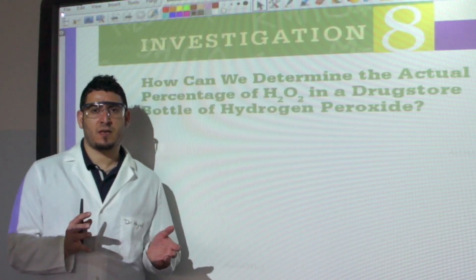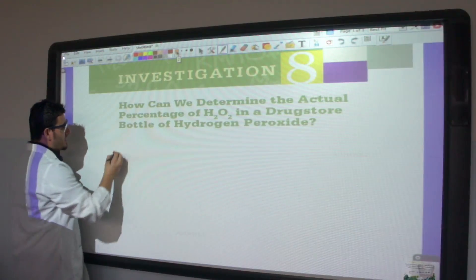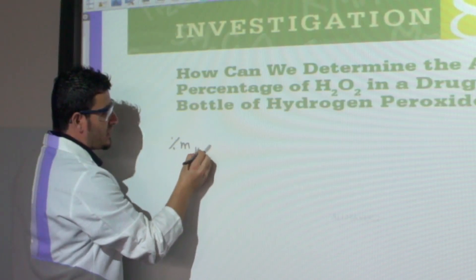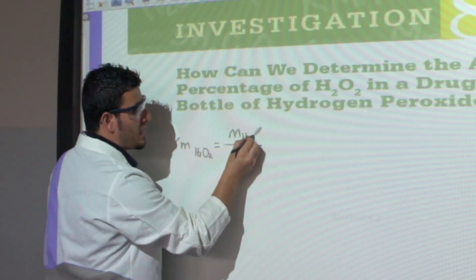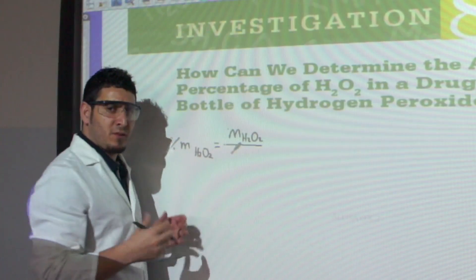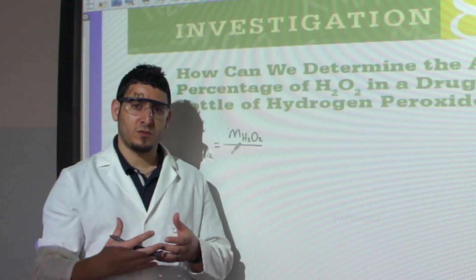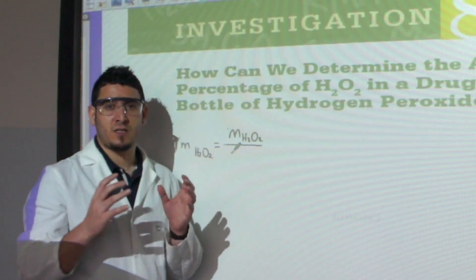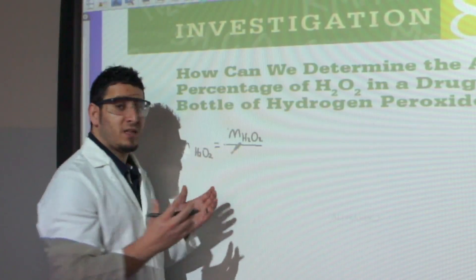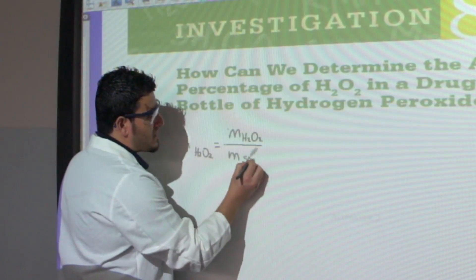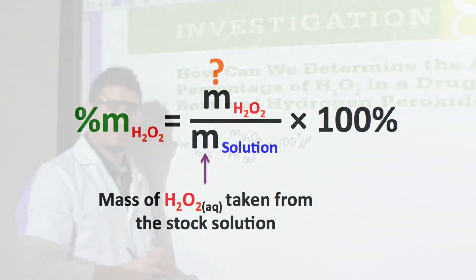The objective of this experiment is to determine the mass percent of hydrogen peroxide in the given solution. To do this, I will need to find the mass of hydrogen peroxide divided by the mass of the solution. Since mainly hydrogen peroxide and sulfuric acid are in water solution, I consider the volume of the solution equal to the volume of water, using a density of water equal to 1 g/mL to find the mass of the solution, multiplied by 100%.